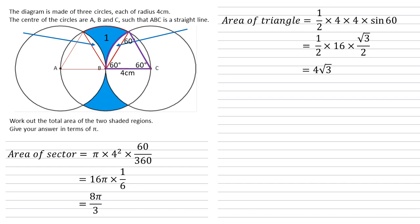So the segment that we're looking for is the area of the sector minus the area of the triangle. So 8π/3 - 4√3.